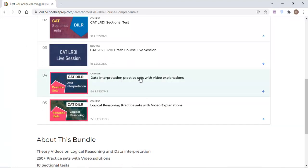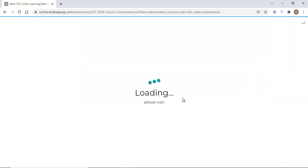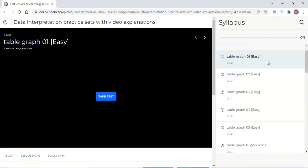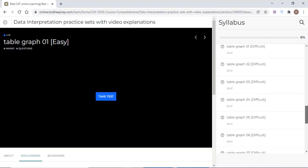Within this you will be finding the fourth folder that is data interpretation practice sets with video explanation. You have to go inside it and the very first section is the table graph. So I have given you 32 sets and it's a good mix of easy, moderate and difficult level of sets.